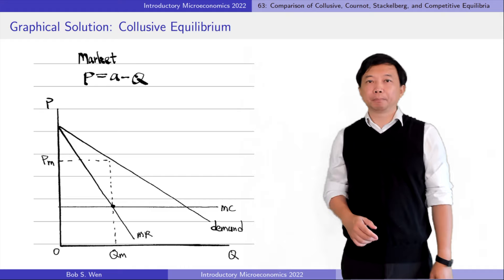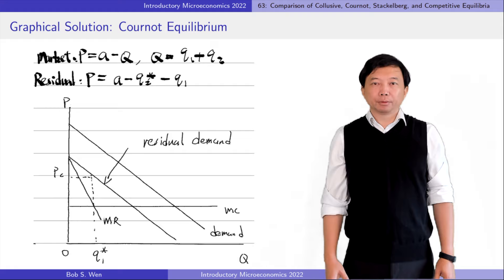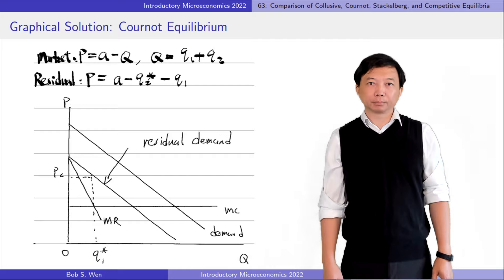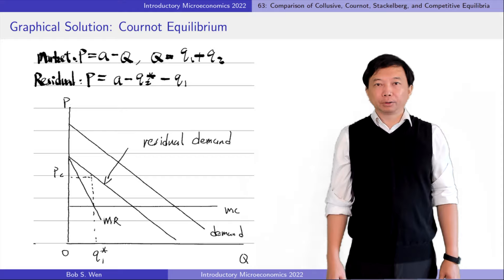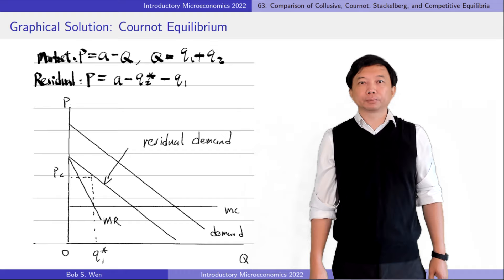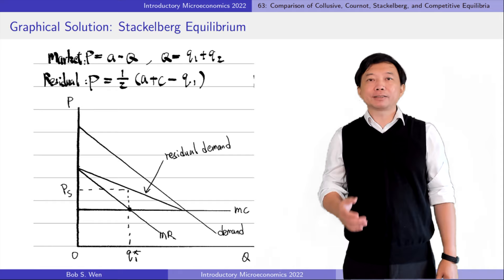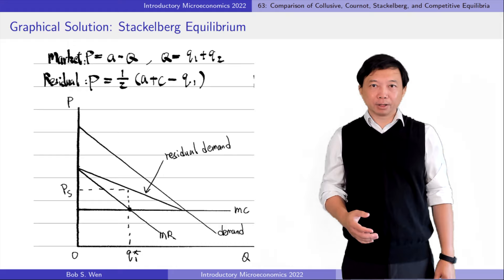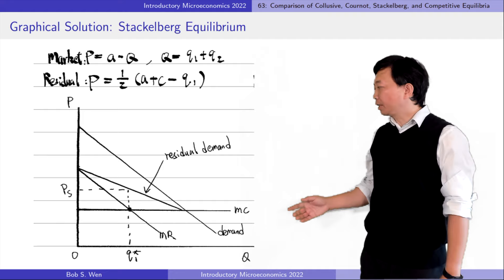Next, the oligopoly firms simultaneously choose their output quantities in the Cournot model. Firm 1's residual demand curve is parallel to the market demand curve. It sets its output Q1 star where its residual marginal revenue is equal to its marginal cost. The Cournot equilibrium price is Pc. Third, the oligopoly firms sequentially choose their output quantities in the Stackelberg model. The leader firm faces its residual demand and sets the output quantity so that the marginal revenue corresponding to the residual demand is equal to the marginal cost. The leader's Stackelberg equilibrium quantity is Q1 star and the Stackelberg equilibrium price is Ps.